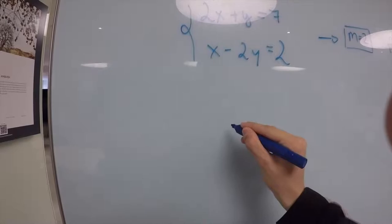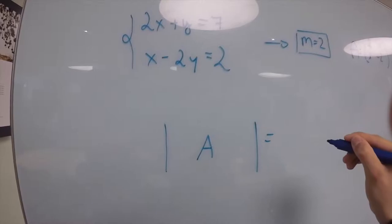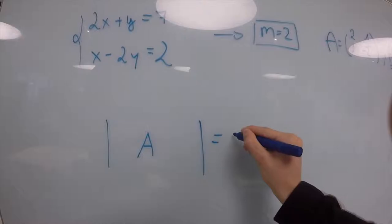Now we're going to do the determinant of A and start with the Cramer mode. Our determinant of A is equal to minus 5. And then we will start with Cramer mode.